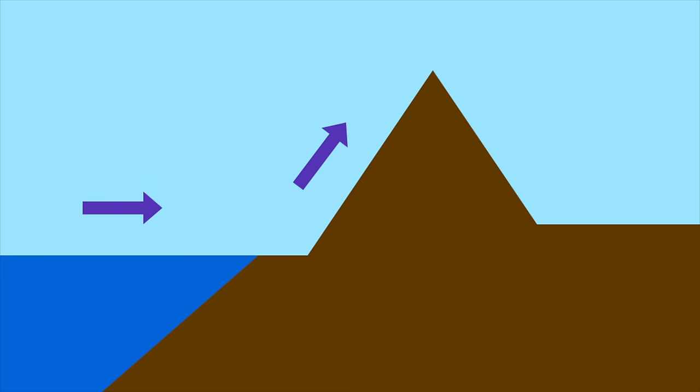As the air mass goes upwards, it cools and eventually condenses into clouds. Soon after, the cloud can no longer hold any more water, and it begins to rain.